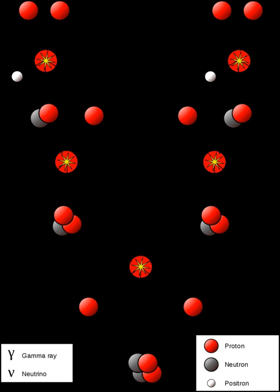The first step involves the fusion of two 1H nuclei into deuterium, releasing a positron and a neutrino as one proton changes into a neutron. It is a two-stage process.